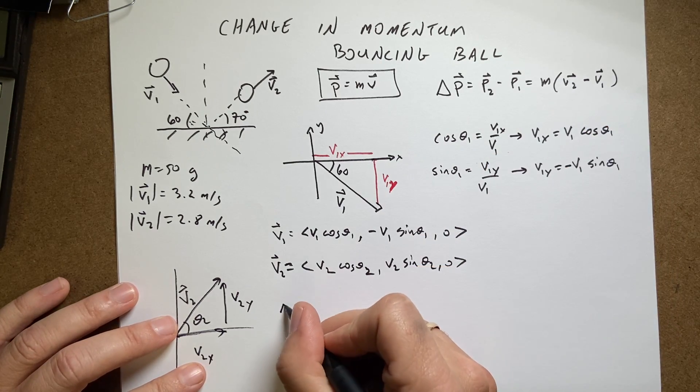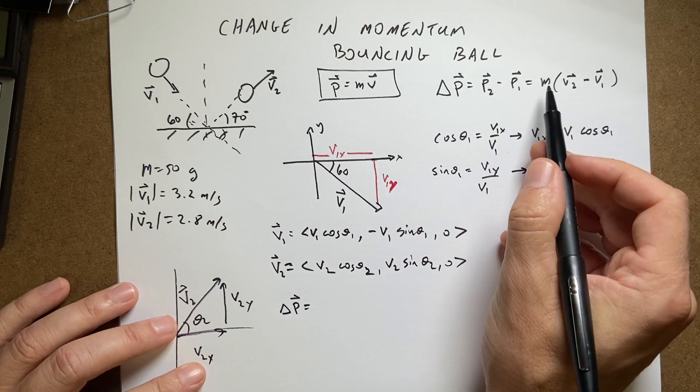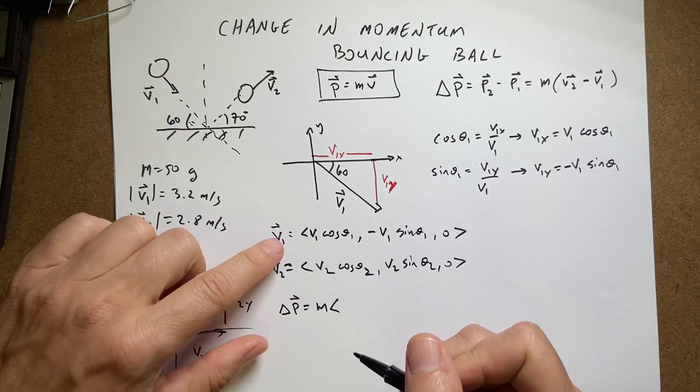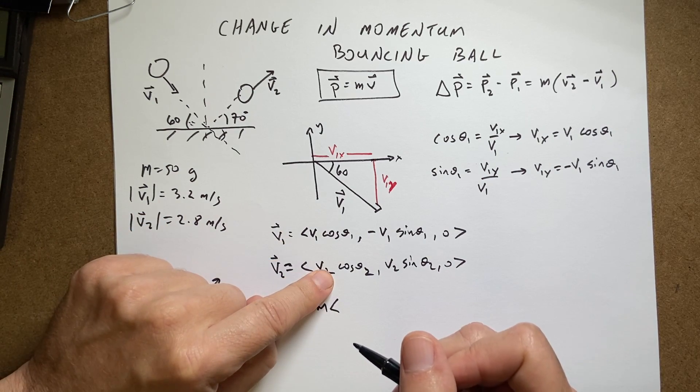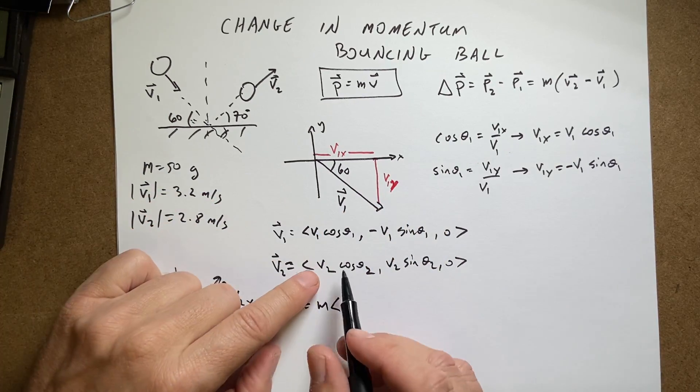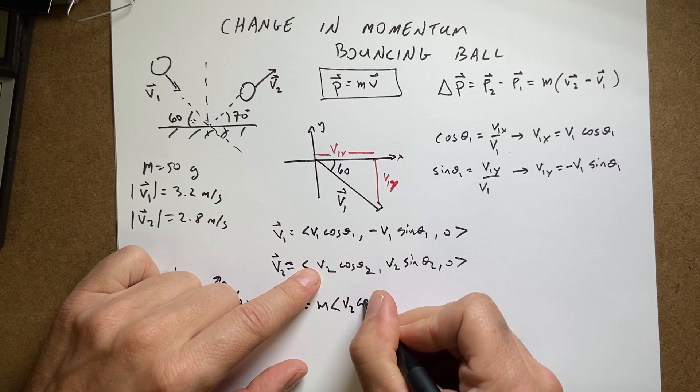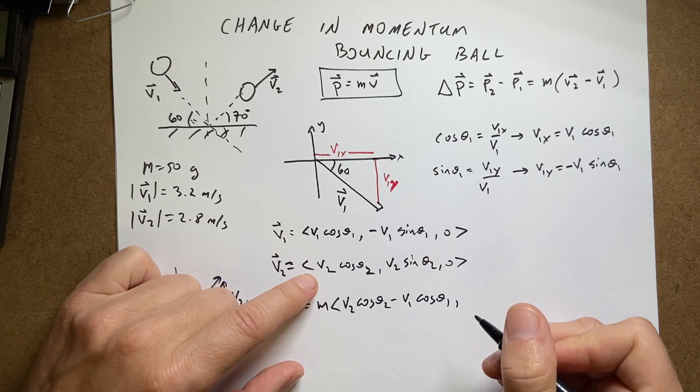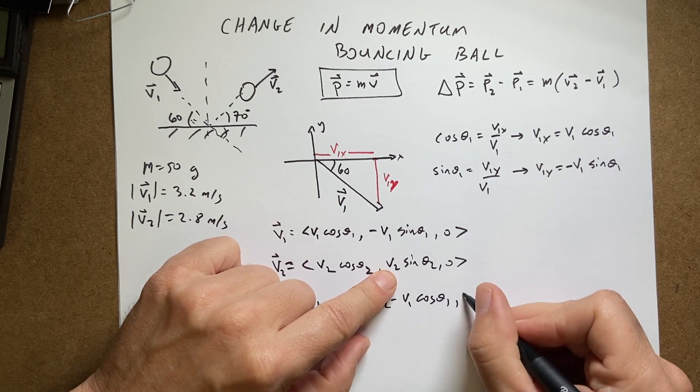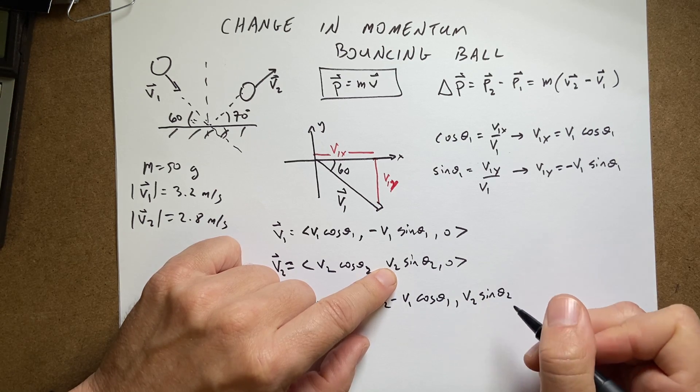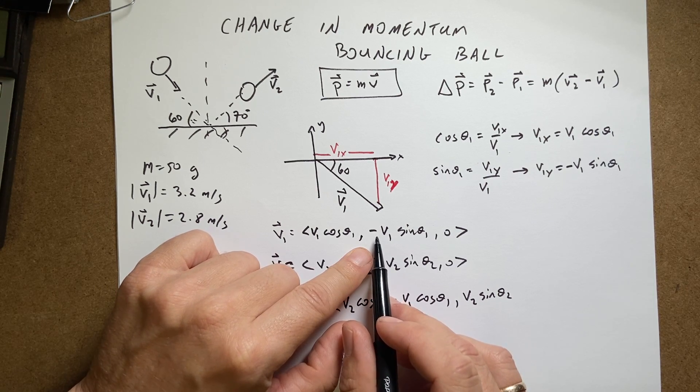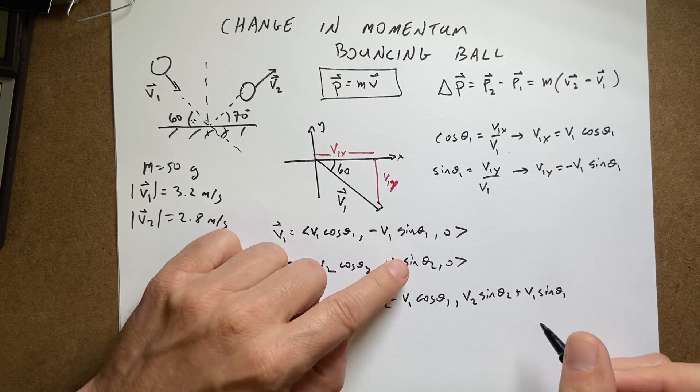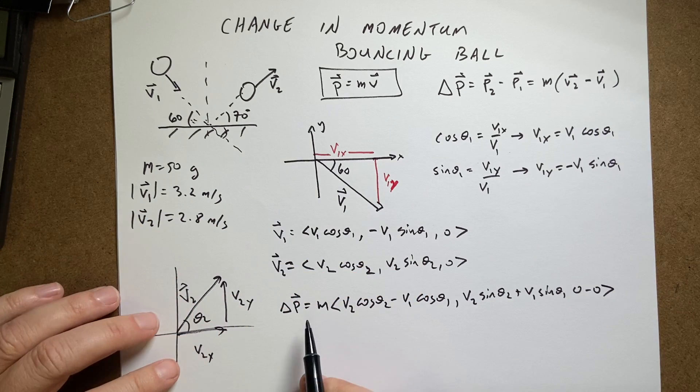So now I can go back up here to my change in momentum. Delta p is going to be the mass times the difference in these velocities. So how do you subtract velocities? Well, if I take v2 minus v1, I'm going to subtract the x components, subtract the y components, subtract the z components. So this is going to be v2 cosine theta2 minus v1 cosine theta1. That's my x component. My y component is going to be v2 sine theta2 minus negative v1 sine theta1. So I actually get plus v1 sine theta1. And then I'm going to get 0 minus 0. And I multiply that all by the mass.